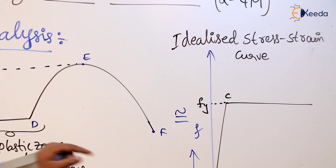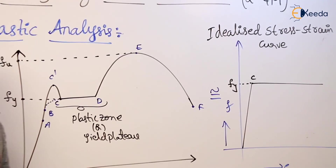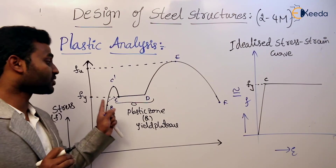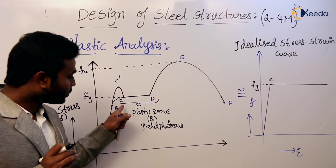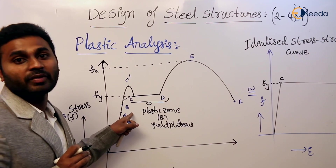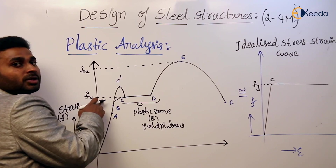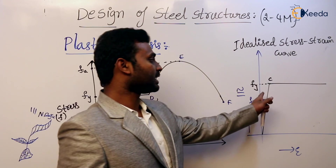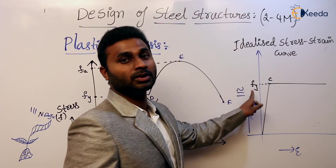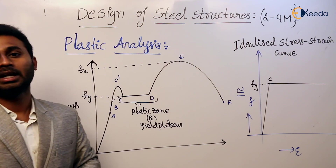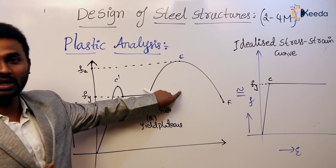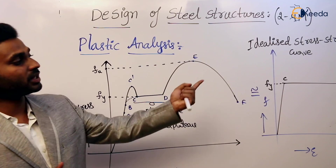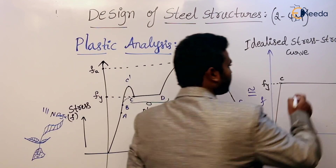In plastic analysis, we are going to use this idealized graph. One more thing to repeat: the main basis for plastic analysis is the reserve strength of mild steel — having strength beyond yielding. The plastic analysis and total design depends on this curve. The graph obtained from the original graph is bilinear — meaning it has one straight line going up and another straight line that is horizontal.